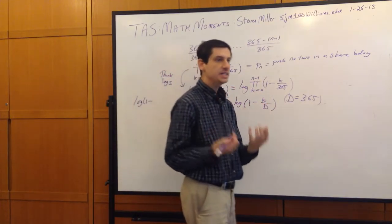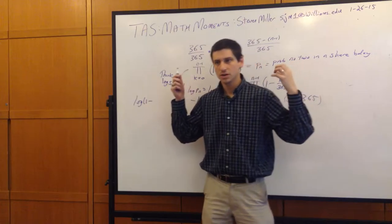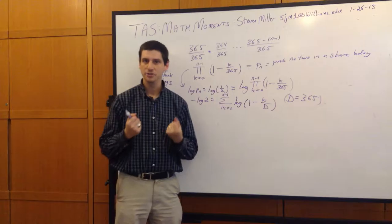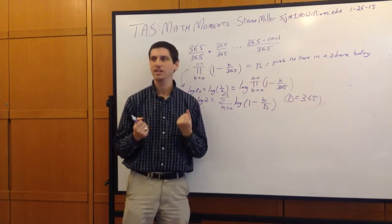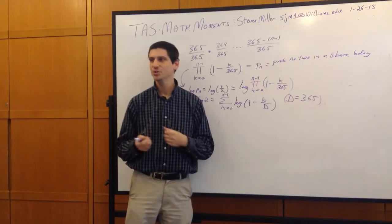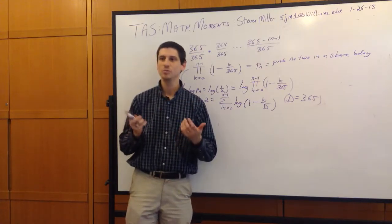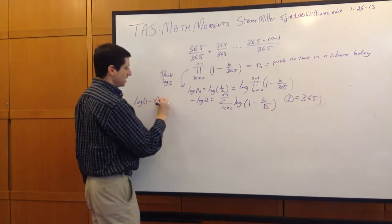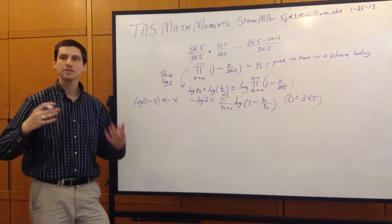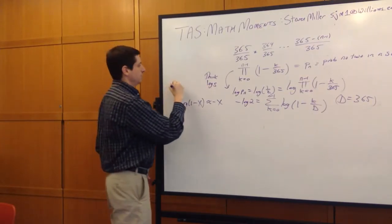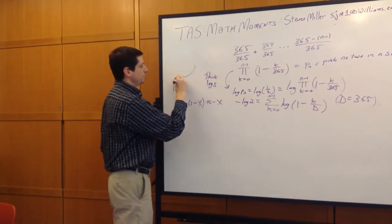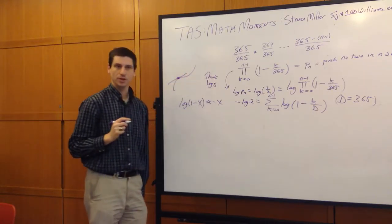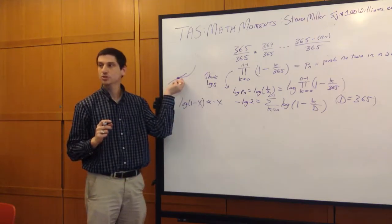One of the key ideas of calculus that should be drilled into students is that functions are hard to work with — unless it's a straight line. We are really good at straight lines. So whenever we see a function that's not a straight line, we replace it with a straight line and do a linear approximation. The log of (1 minus x) is approximately negative x. This is the first-order Taylor series — the tangent line approximation.